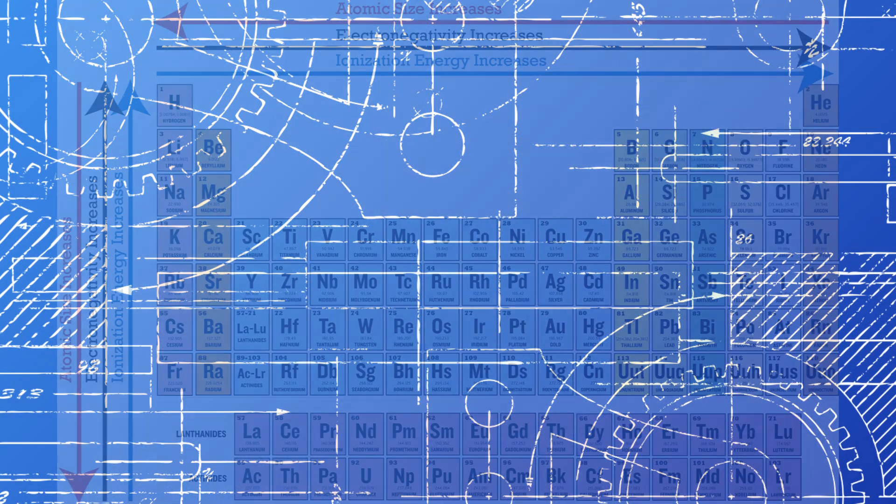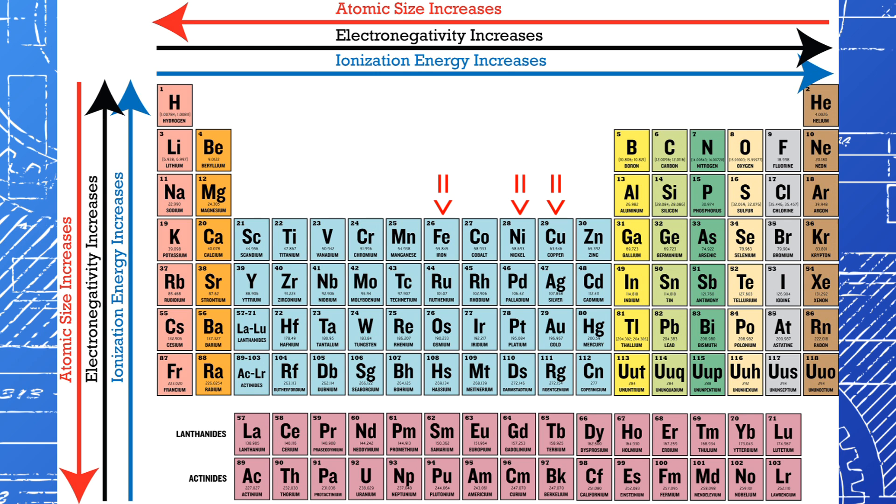Which kind of makes sense when you look at their location in the periodic table compared to iron. Since nickel and copper are right next to each other, they have very similar electronegativities, and therefore are not very reactive with each other.